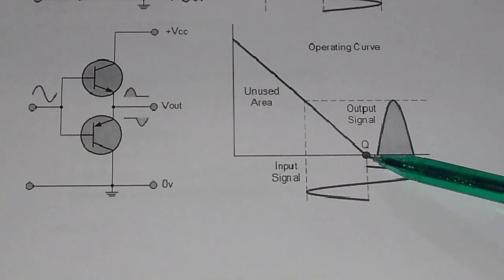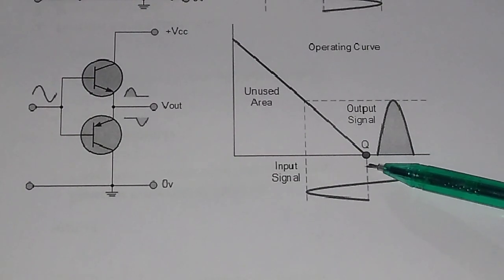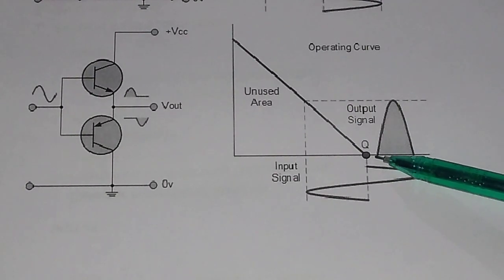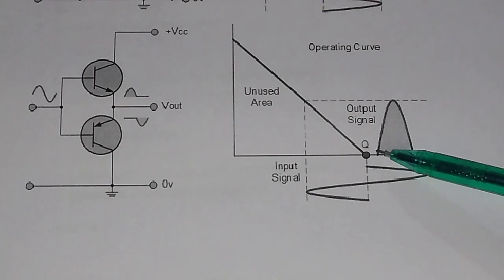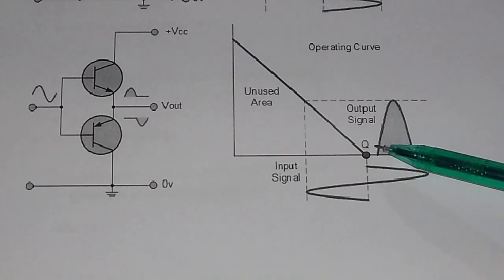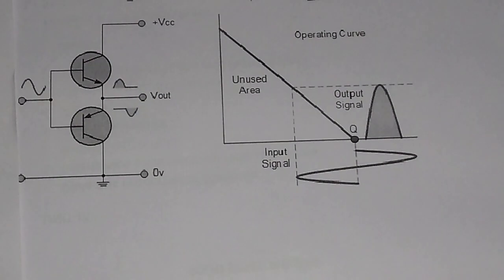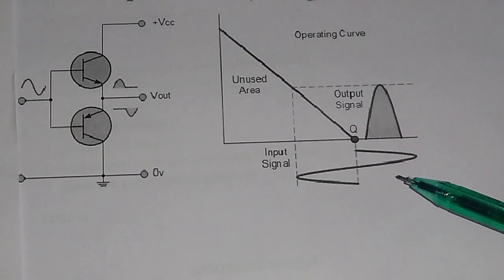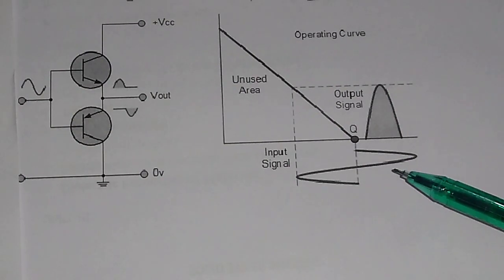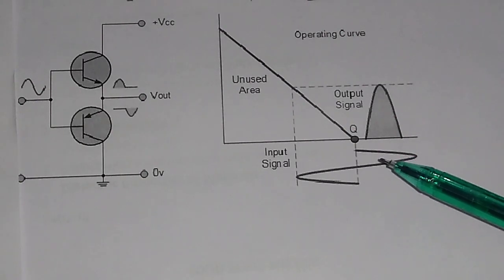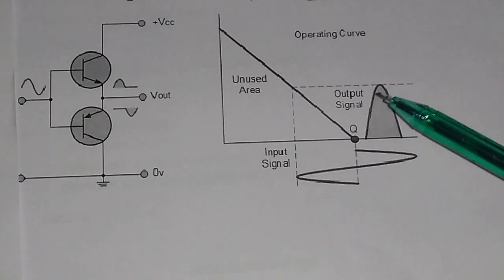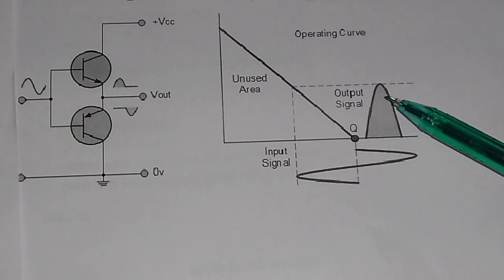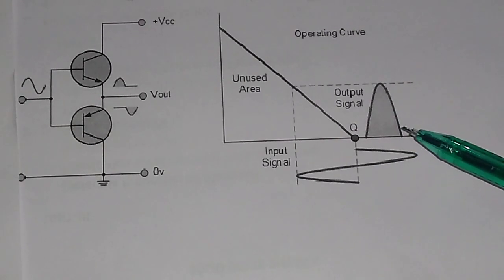Since there is no current flow due to the DC source, the efficiency is more in class B operation compared to class A. The conduction angle in class B is 180 degrees, that is half cycle of conduction.